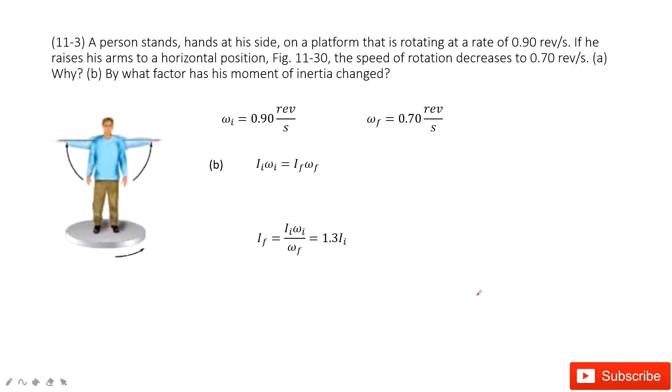The second part, we need to find the ratio between the moment of inertia changed. See, this one, the initial angular momentum equal to final angular momentum. So this one, we find, is the final moment of inertia. It's just 1.3 times initial moment of inertia. Thank you.